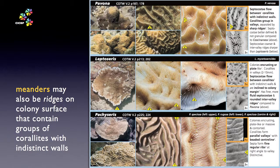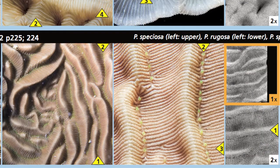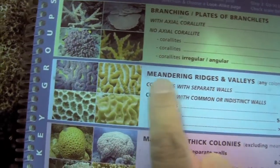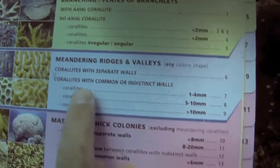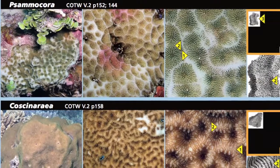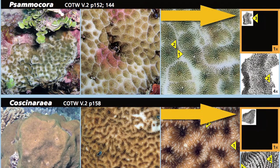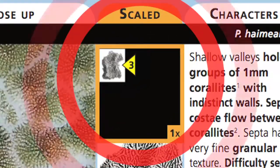Here are some examples where the meandering appearance is caused by ridges on the colony surface. The coralites themselves may have indistinct or absent walls. Remember, the purpose of this is just to recognise the meander wall state so you can move on to a lookalike page. Practice makes perfect. Check the true scale in this diagram — these coralites are tiny and the big close-up images can be very seductive, leading to mistakes if you do not check the scale.